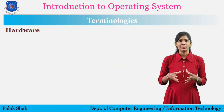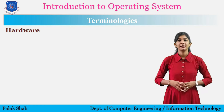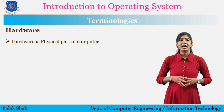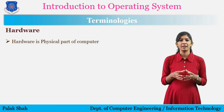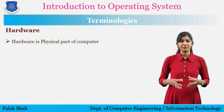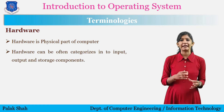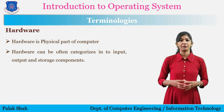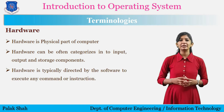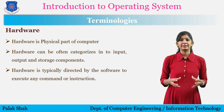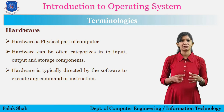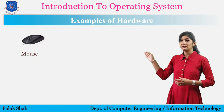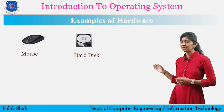The next terminology is hardware. What is hardware? Hardware is the physical part of a computer system or electronic device. Hardware we can touch and feel. Hardware is only one part of the computer system. Hardware can often be categorized into input, output, and storage or processing components. Hardware is typically directed by software to execute any commands or instructions. A few examples of hardware are a mouse, hard drive, and keyboard.